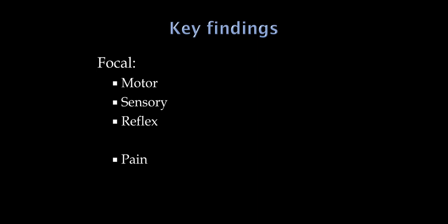Both radiculopathies and plexopathies are painful, and we use the term radicular pain in patients that have radiculopathies. They're going to have neck or low back pain with shooting, electrical, burning pain in whatever root is involved. So if the patient has a C6 radiculopathy, they're going to tell you it goes right down to the thumb. Often just the history will suggest what part of the roots or plexus are involved.